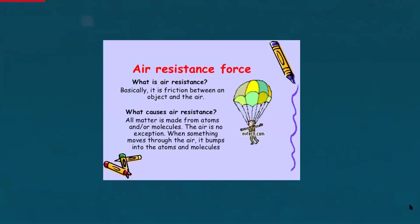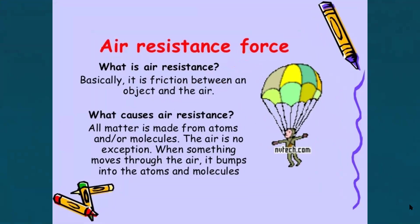What is air resistance? It is basically the friction between an object and the air. That is, when objects move in air, they experience an opposite force which will be acting against the direction of motion of the object. And what is the reason for this air resistance? As we all know, every material is made up of atoms or molecules. Definitely air is also made up of atoms or molecules. When something moves through the air, it bumps into the atoms and molecules, which creates an opposition against the motion. So that is the reason for air resistance.